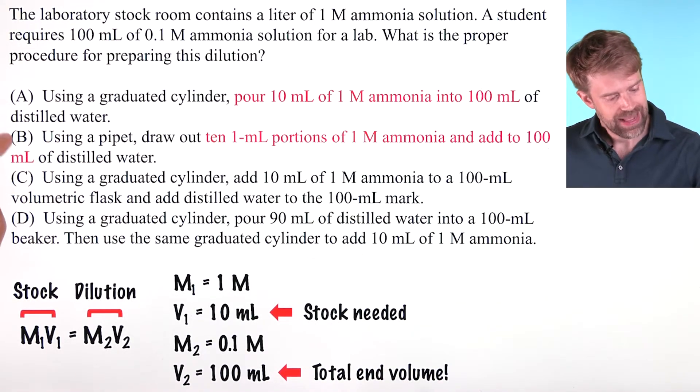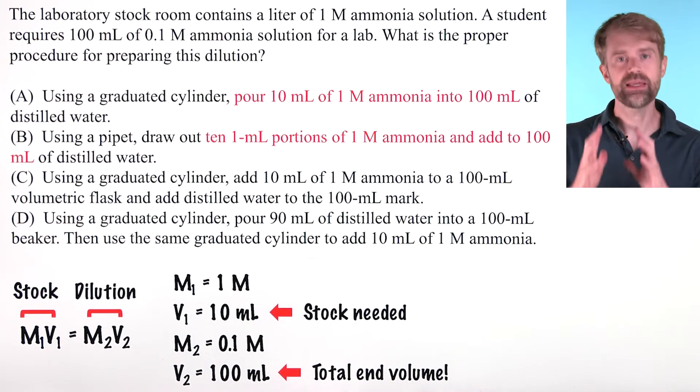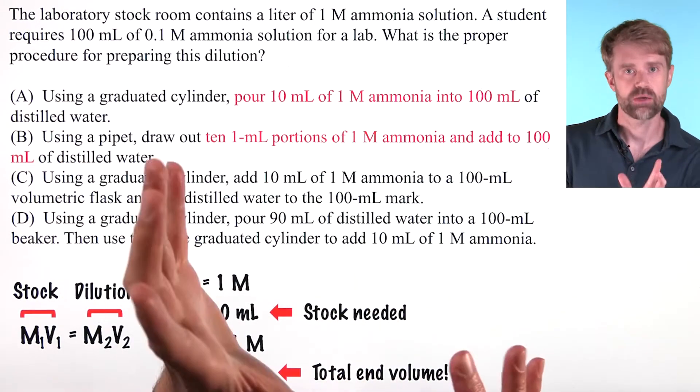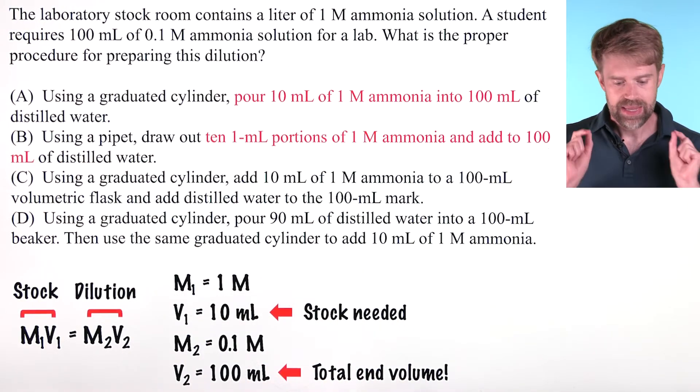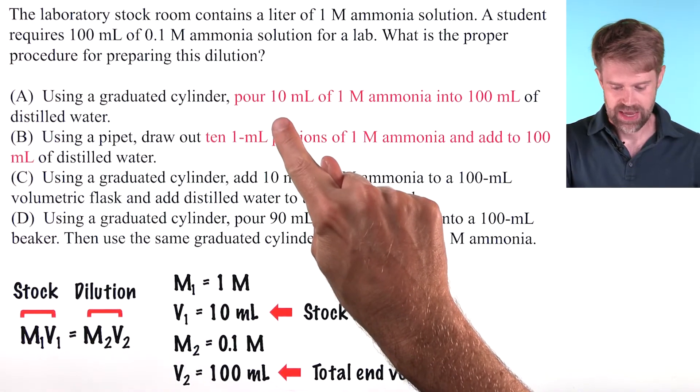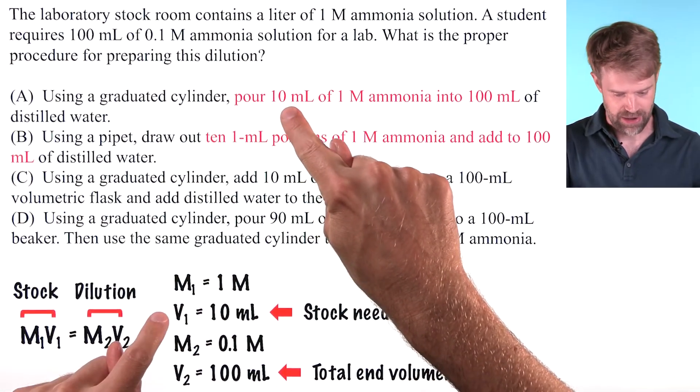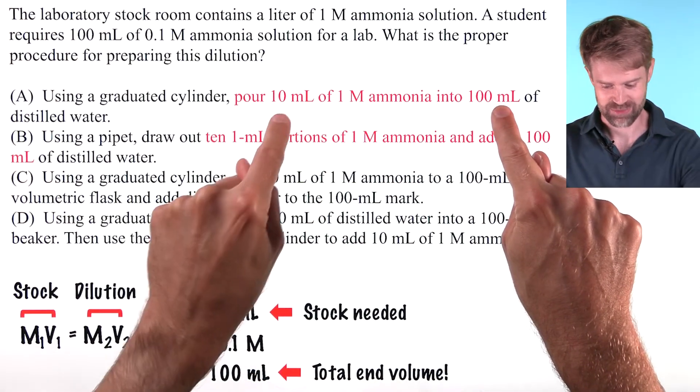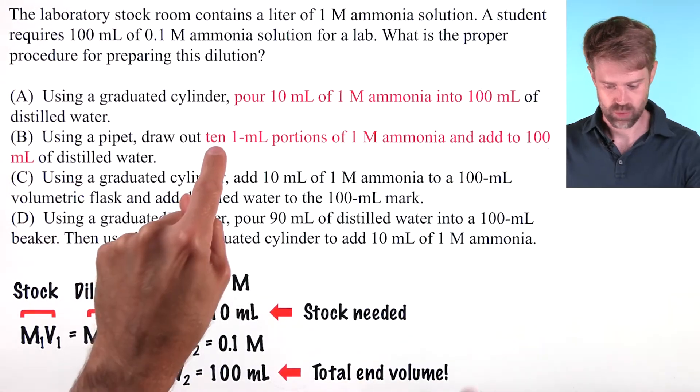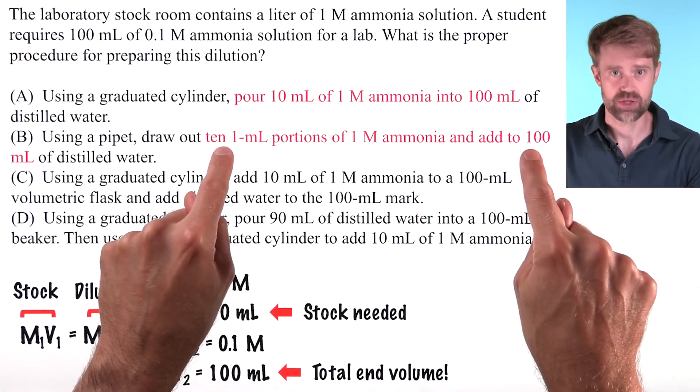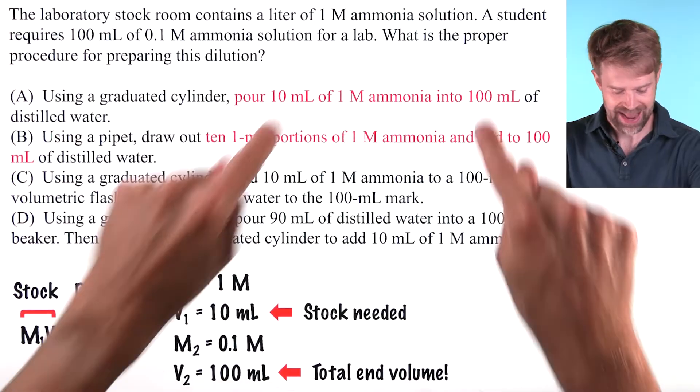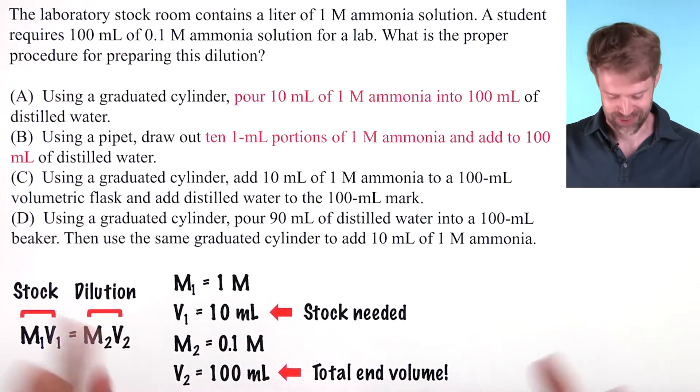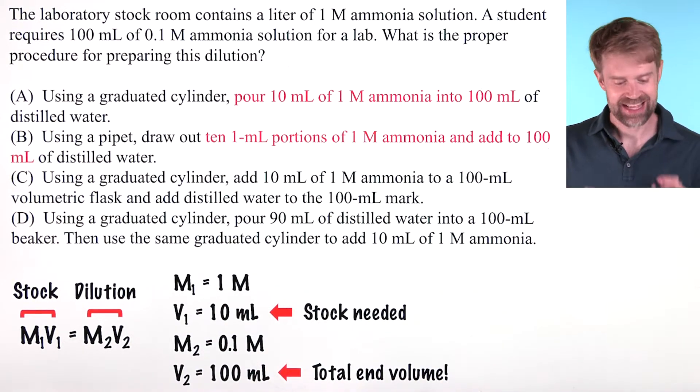So look at these two answer choices. They are perfectly engineered to trick students who make that mistake we talked about earlier. In both of these, the student is taking the amount of V1, 10 milliliters, and adding it to 100 milliliters, which is V2. That's what happens here, and it's what happens here. This is a little bit more complicated, but it's the same thing. Again, it's 10 milliliters added to V2, 100 milliliters. Those are both wrong. The final volume isn't 110. It's 100.